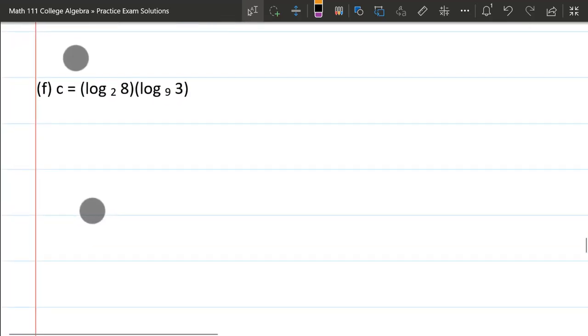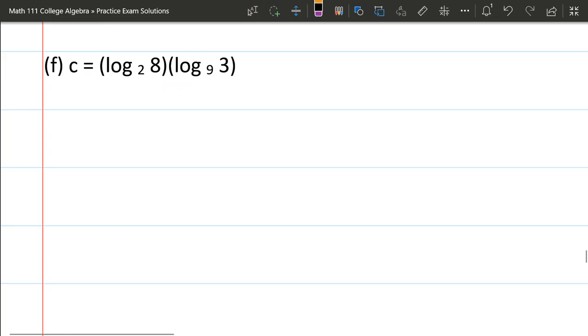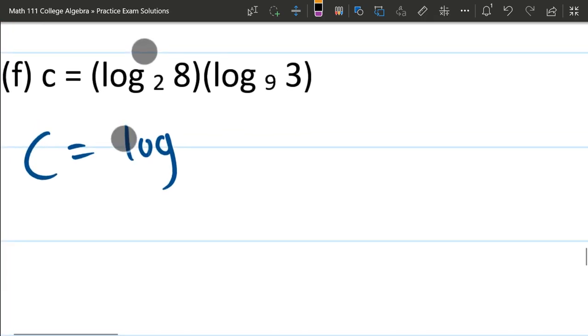So now part f. You might be tempted to try to rewrite this by moving the base over, but the problem is there's another log that's being multiplied right next to it, so that's not going to be an option. On this one, what I'm going to do is look at the bases, and we're going to exploit the fact that 8 is a power of 2. Now 3 is a power of 9, but probably not one you're thinking about.